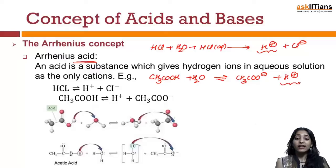Now here also in this case the cation given is H⁺. So we can say that the acetic acid which we have taken here is an example of Arrhenius acid.